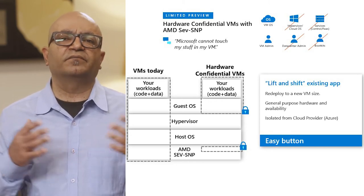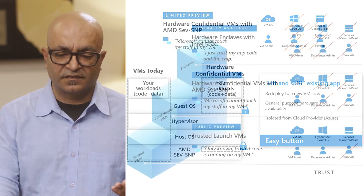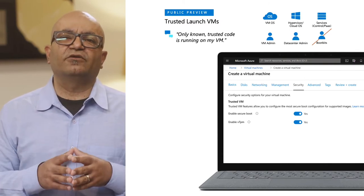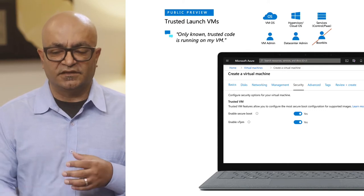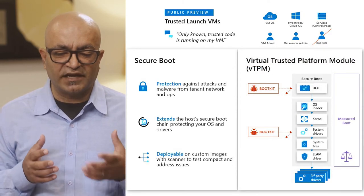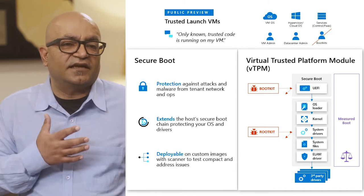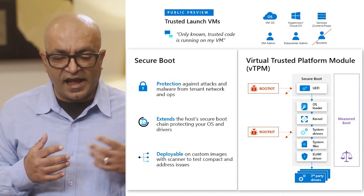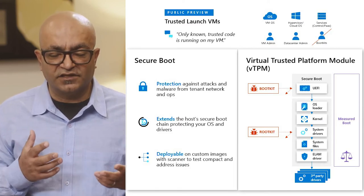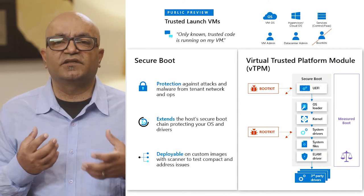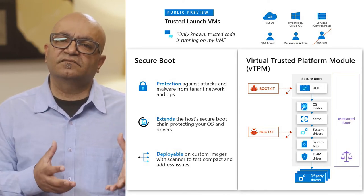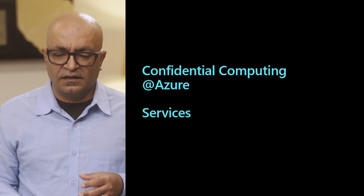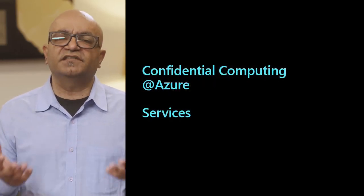The bottom part of the trust ladder is trusted launch VMs. Trusted launch is a feature on an existing virtual machine that lets you enable secure boot and vTPM capability. Secure boot protects you against attacks from malware, extending secure boot capabilities down to your operating system, protecting against rootkits and bootkits. The vTPM capability is powerful because it ensures the operating system you think you're running on is actually the operating system you should be running on.